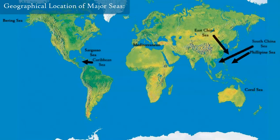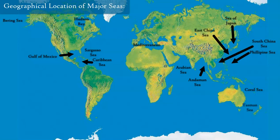You've got the Caribbean Sea, the South China Sea, the East China Sea, the Gulf of Mexico, the Arabian Sea, the Hudson Bay area in northern Canada, the Sea of Japan, the Andaman Sea in the Indian Ocean, the Tasman Sea off the coast between New Zealand and Australia, the Weddell Sea off Antarctica, the Red Sea — a classically well-known stretch of water between the Arabian Peninsula and northern Africa — and the Black Sea, a well-known body of water in Europe and the Eurasian continent.